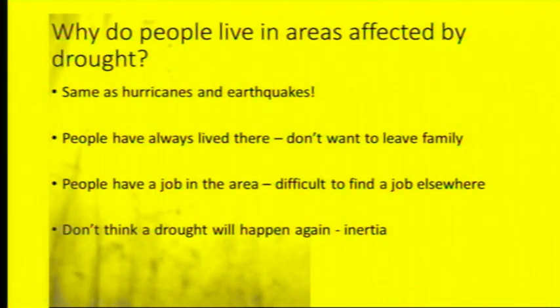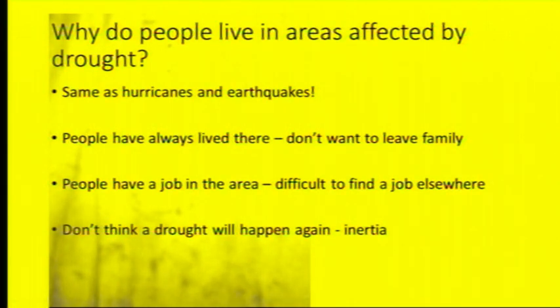Why do people live in areas affected by drought? Same as for hurricanes: people have always lived there and don't want to leave family and friends. People have a job in the area and it might be difficult to find one elsewhere, and they don't think it's going to happen again. We call this inertia.